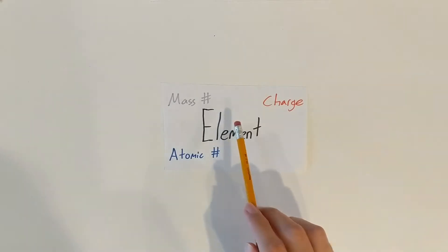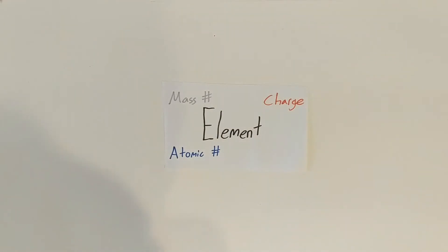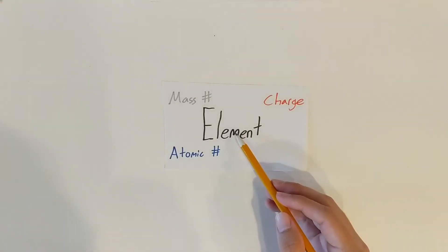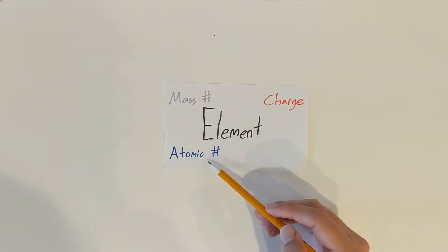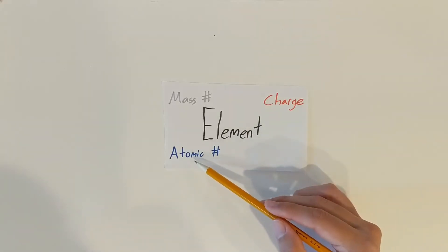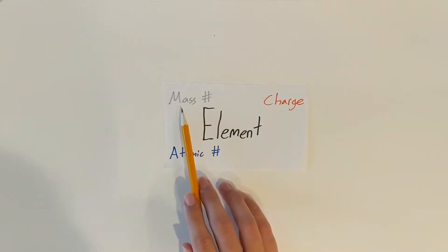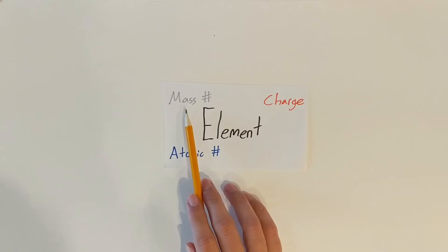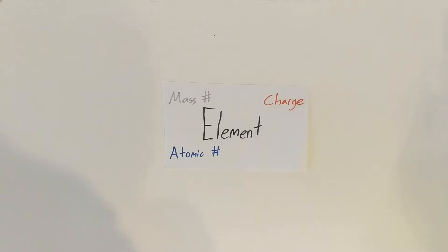If we remember, we put our element symbol in the middle, and then on the bottom left we have our atomic number. Our atomic number is just how many protons we have, and it's always going to be linked with a certain element. For example, carbon has an atomic number of six, meaning it has six protons, and oxygen has an atomic number of eight, meaning it has eight protons. On the top left we have the mass number, which is just our protons and our neutrons added together. And in the top right we have our charge, which is our protons minus our electrons.